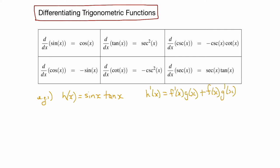Recall that the product rule states that when you multiply two functions, the derivative is the derivative of the first function times the second, plus the first function times the derivative of the second. So here, the derivative of sine x is cos x, so this becomes cos x times tan x, plus the first function sine x times the derivative of tan x, which is sec squared x.